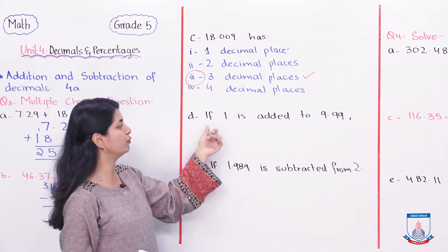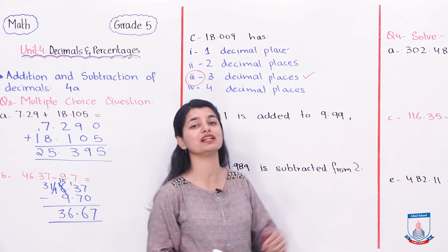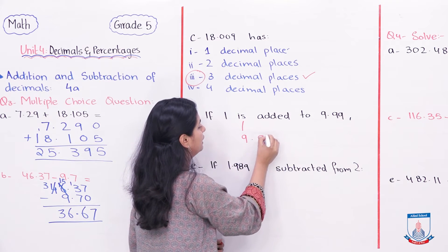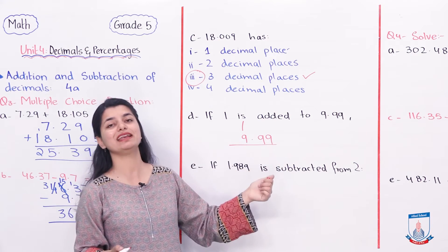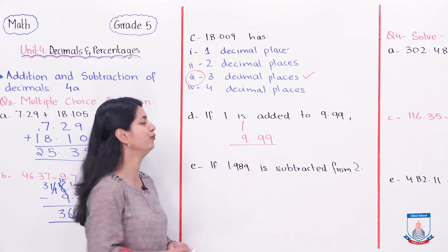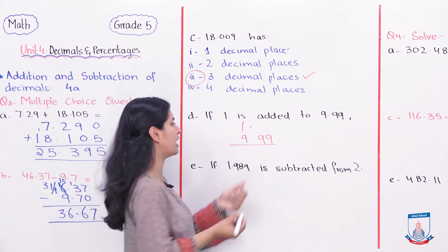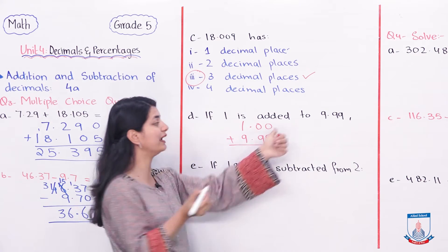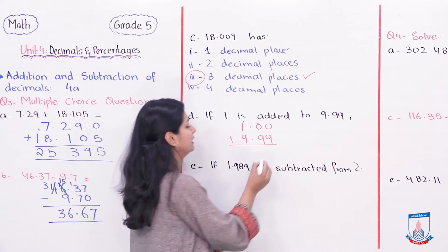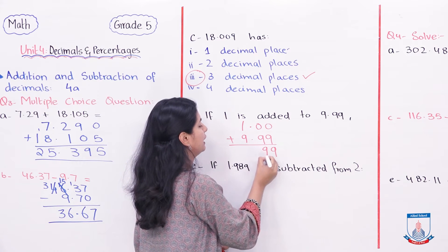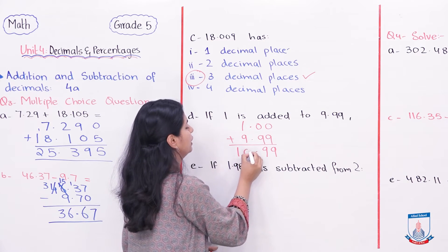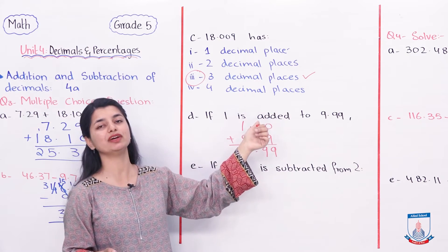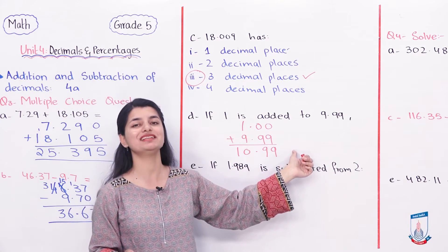Part 4 is: if 1 is added to 9.99, the answer will be. Now these are obviously unlike decimals. I can make them like decimals. Where there are digits missing, add zeros. Now I will add them. 0 plus 9, 9. 0 plus 9, 9. 1 plus 9, 10. So my answer is 10.99. So I have to select 10.99.